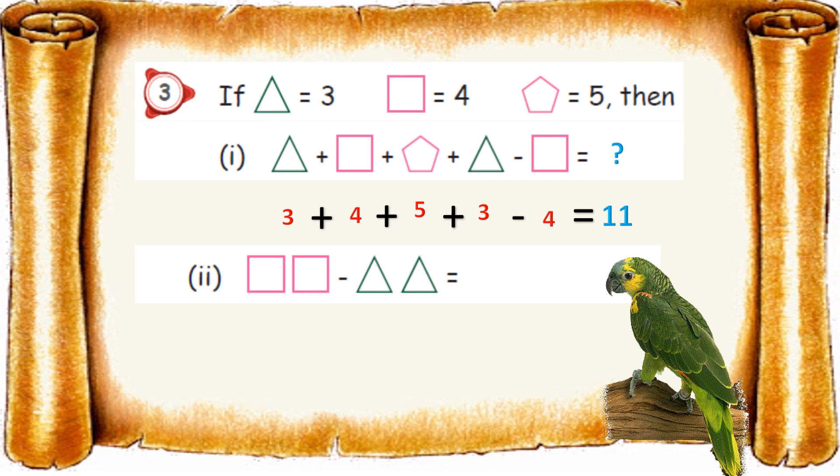Come to the second one. Here also fix the same number. Instead of square, we fix 4. Here also 4 minus, then 3 and here also 3. So bring down the same number. 44 minus 33. So what will be the answer? Yes, the same answer is 11. Hope you understand.